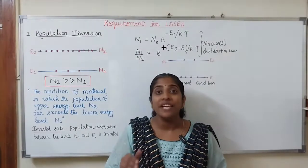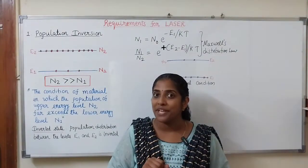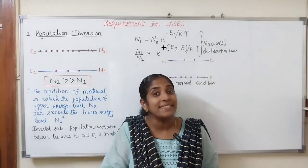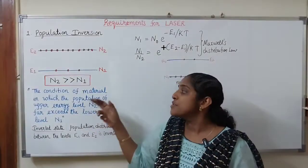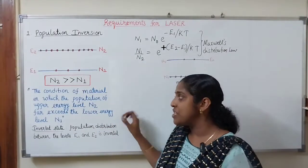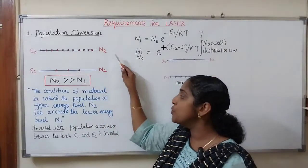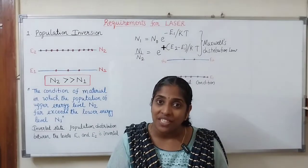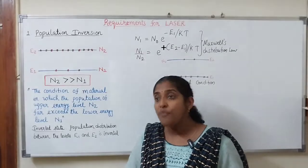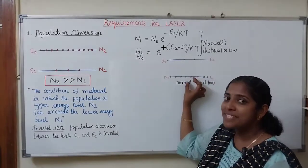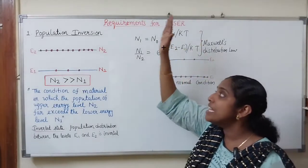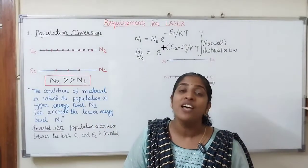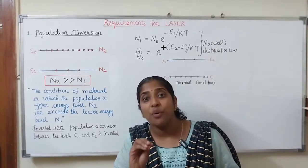But for the laser action to take place, we require stimulated emission of radiation. For stimulated emission to take place, the number of atoms in the higher energy level must be greater than the number of atoms in the lower energy level. The condition of the material in which the population of upper energy level N2 far exceeds the lower energy level N1 is known as population inversion. That is, it is the inverted state of normal condition — the inverted state of population distribution between levels E1 and E2.